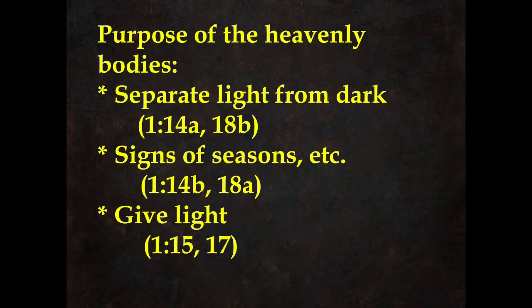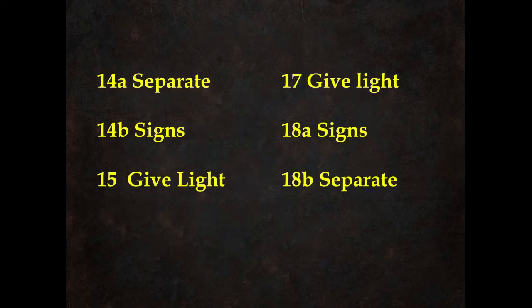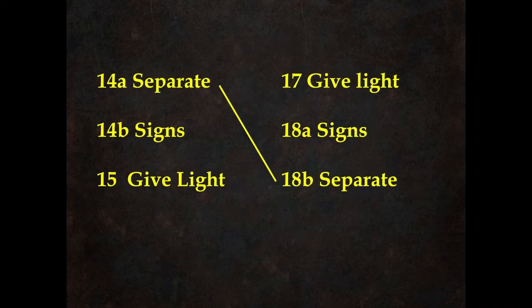The purpose of the heavenly bodies are given twice. In verses 14 and 18, it's to separate light from dark. Also signs of the seasons, and then to give light in verses 15 and 17. This pattern is called a chiasm, where on the left you have what God said earlier: to separate, to be signs, and to give light. Then in verses 17 and 18, he does it in reverse order: to give light, as signs, and to separate.